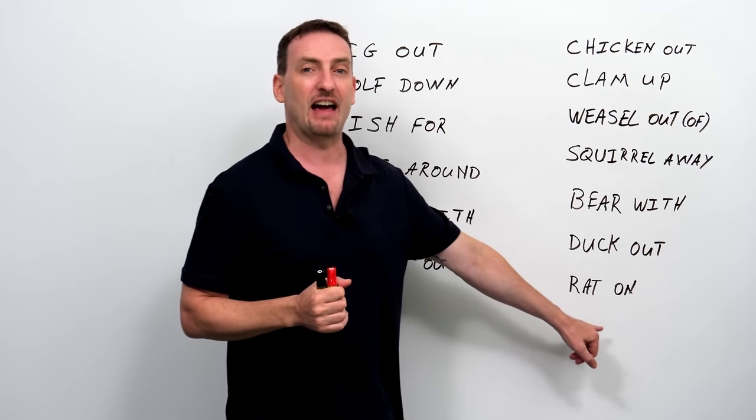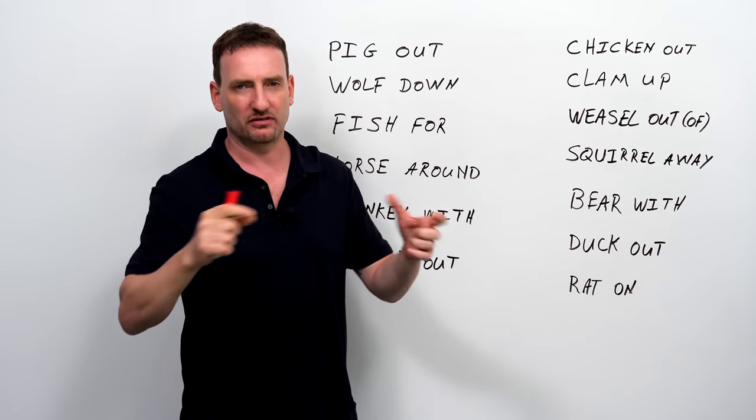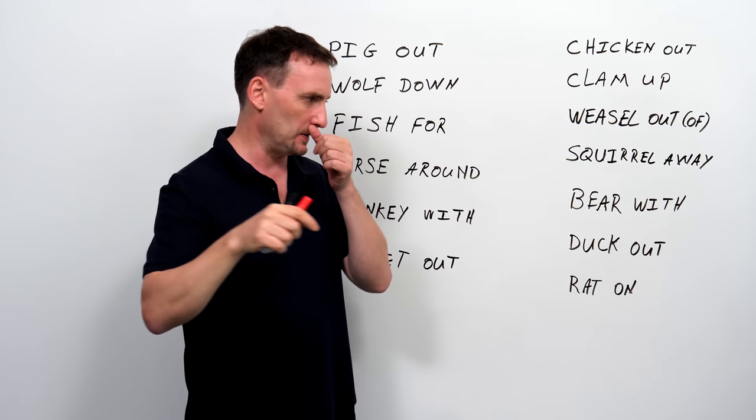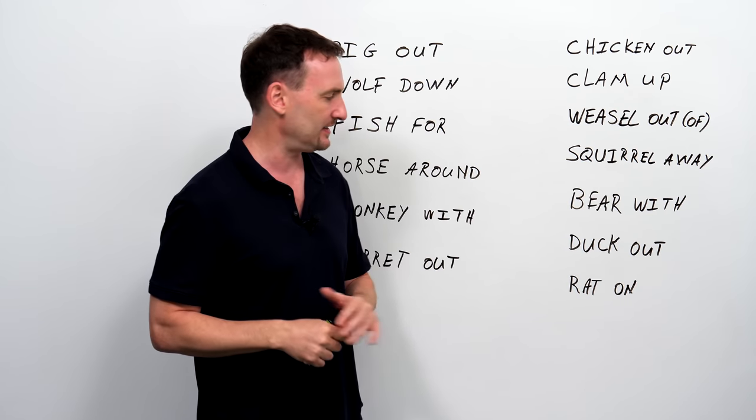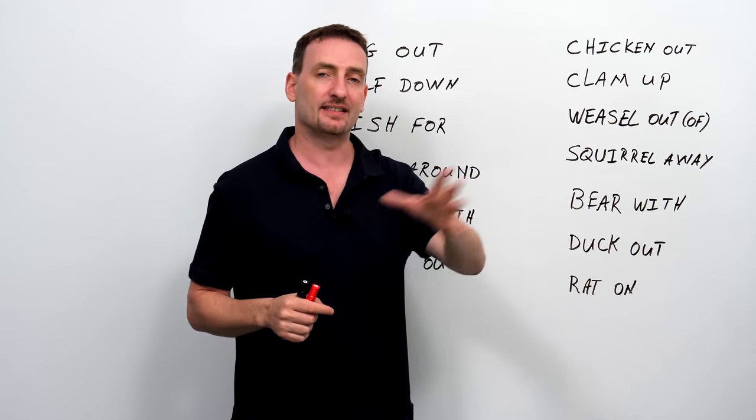And last one, rat on. A rat is like a big mouse, gray, long tail, lives in dirty places.